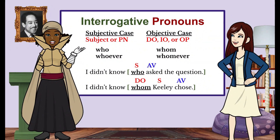For interrogative pronouns, when you need a subject or predicate nominative in your clause, use 'who' or 'whoever.' If you need a direct object, indirect object, or an object of a preposition in your clause, use 'whom' or 'whomever.' For example: 'I didn't know who asked the question' — 'who' is the subject of the verb 'asked' in the dependent clause. 'I didn't know whom Keeley chose' — 'whom' is the direct object of the verb 'chose' in the dependent clause.